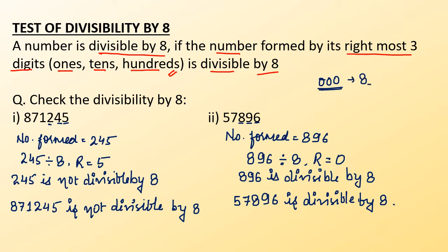That means if a number like 1000 is given, 1000 is completely divisible by 8. Similarly, 5000 is also divisible by 8. Therefore, any number having 3 zeros at the 1's, 10's, and 100's place will also be divisible by 8.